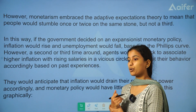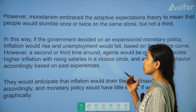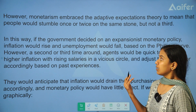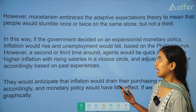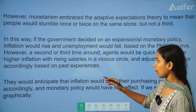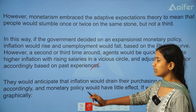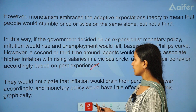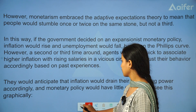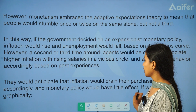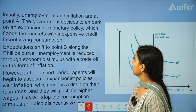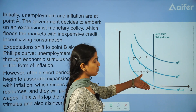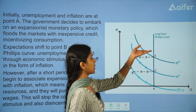What does that mean? Expansionary monetary policy may correct unemployment and inflation one or two times. However, people will learn from past experiences and adjust their behavior accordingly. Graphically, this is the long-term Phillips Curve, or expectation-augmented Phillips Curve, and its shape is vertical. The other curves are short-term Phillips curves.